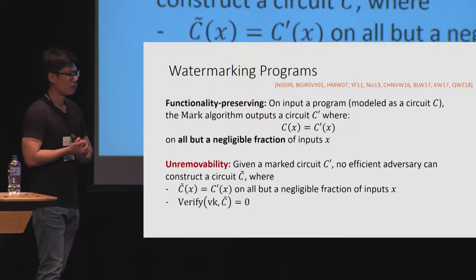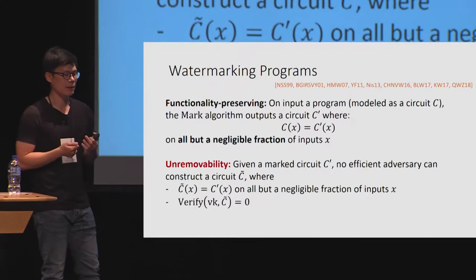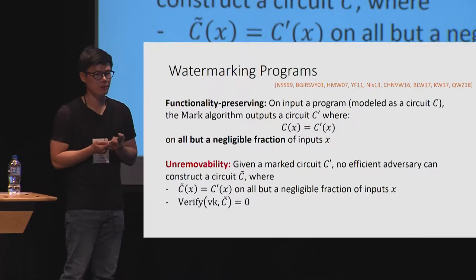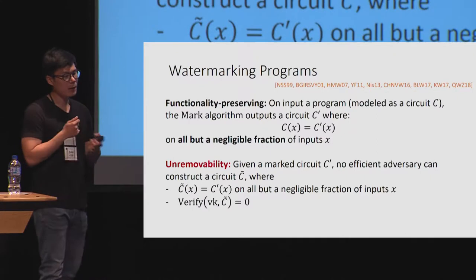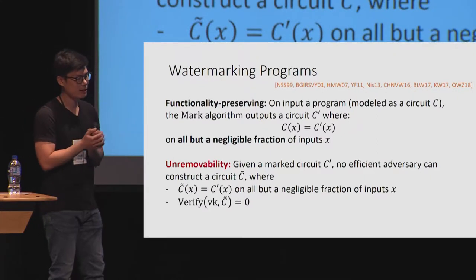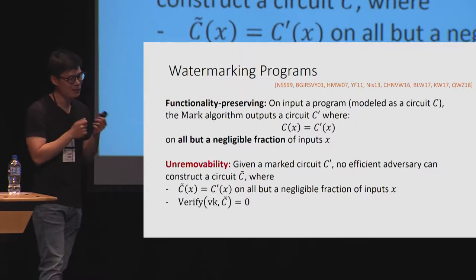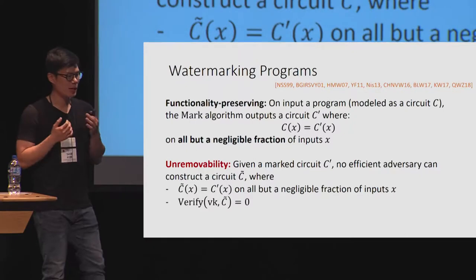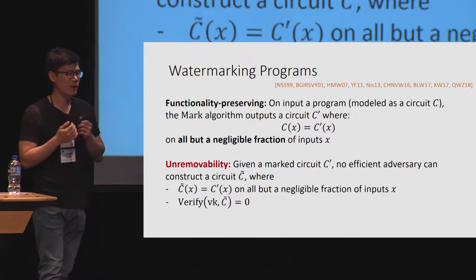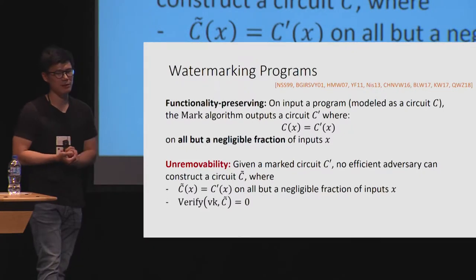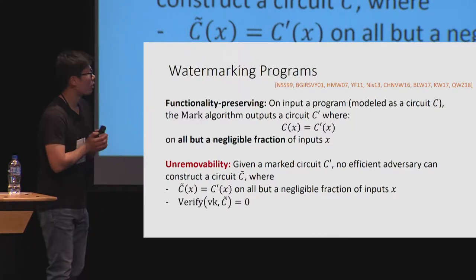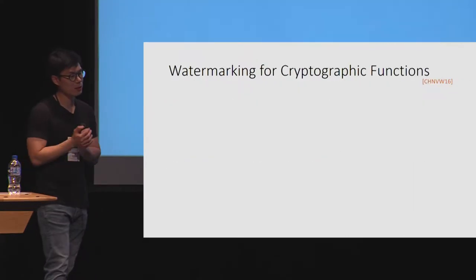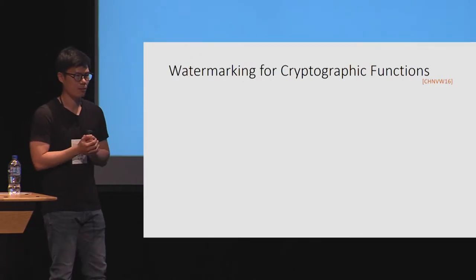The second property is unremovability, which basically says that no efficient adversary given some marked circuit C prime can produce another circuit C-tilde that has almost the exact same input and output behavior as C prime, but for which the verification algorithm fails to detect it as a marked circuit. These are the formal definitions for a watermarking scheme, so let's see what we currently know about cryptographic watermarking.